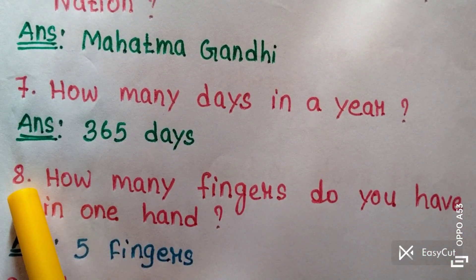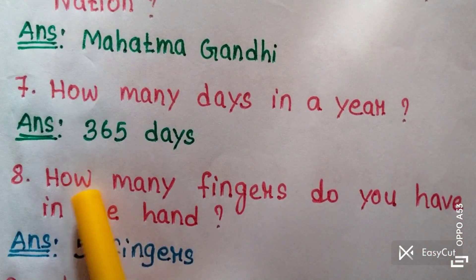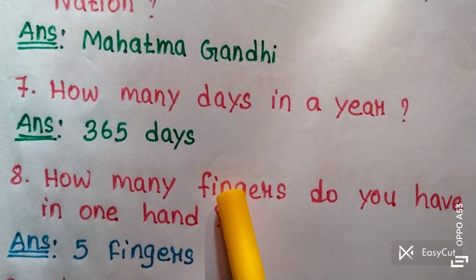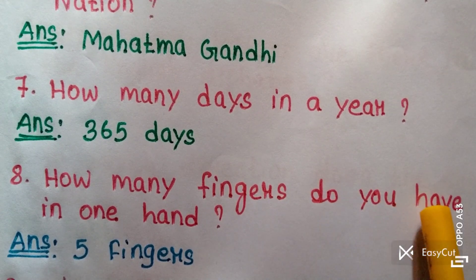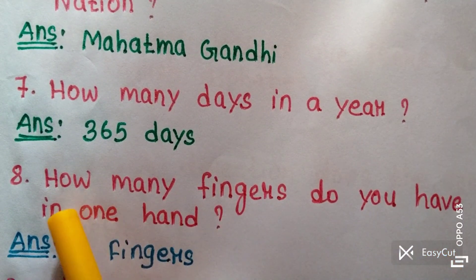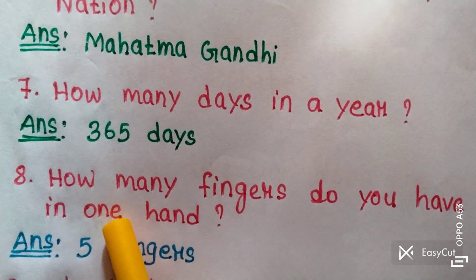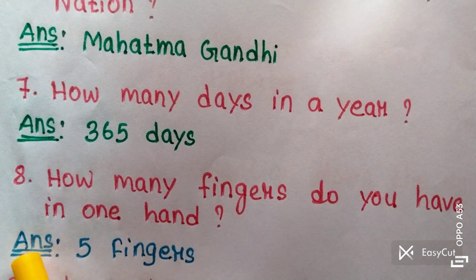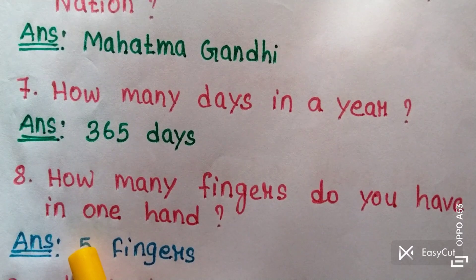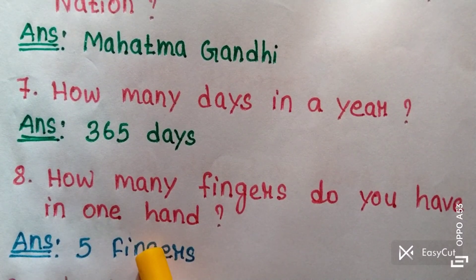Question eight: How many fingers do you have in one hand? Answer: Five fingers.